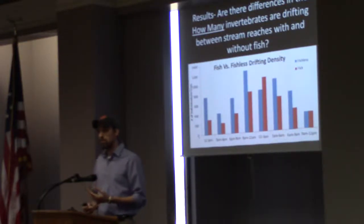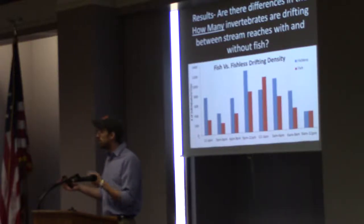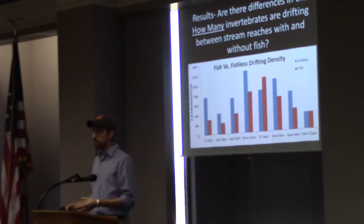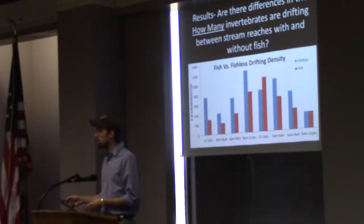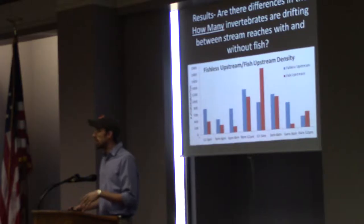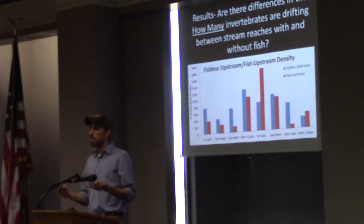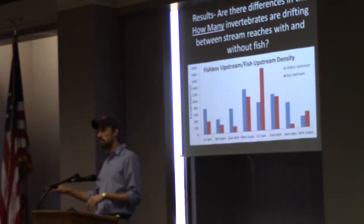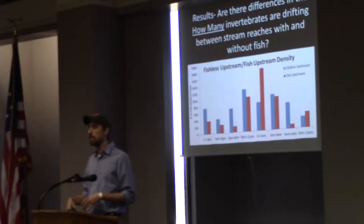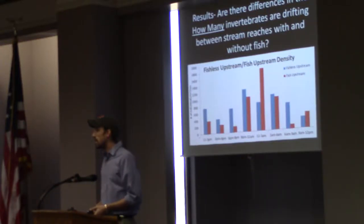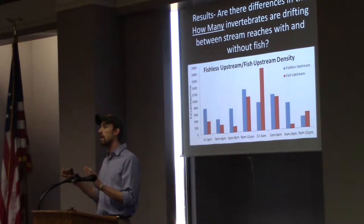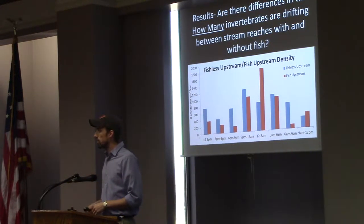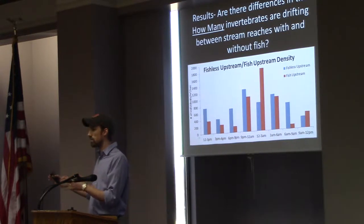We wanted to see how many invertebrates were drifting, so this is looking at densities. You can see fishless and fish reaches — there's really not much difference, there's a lot of noise. This was upstream and downstream of a waterfall. I also wanted to look at just upstream reaches, since it's not necessarily balanced. In a perfect study, you'd have fishless upstream, fishless downstream, fish upstream, and fish downstream. So I just looked at upstream fish versus upstream fishless sections, and you can see there's not a lot of difference in the densities of invertebrates drifting at each time.